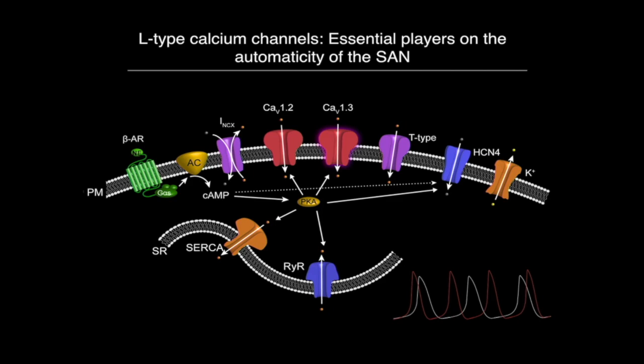The way beta-2 adrenergic receptors communicate and regulate L-type calcium channels depends greatly on the proximity of these proteins. Inside the cell, proteins are carefully arranged to talk to each other, and we are interested in knowing what's happening during aging — whether aging is altering the way these proteins communicate and organize in these special microdomains, and whether that's why the cells start being less functional.